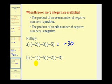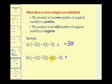On this last example, notice we have one, two, three, four negatives being multiplied together. Well, four is even, so our product will be positive. Now that we know our answer will be positive, we can just multiply one times five, which is five, times two, which is ten, times three, which would be thirty.